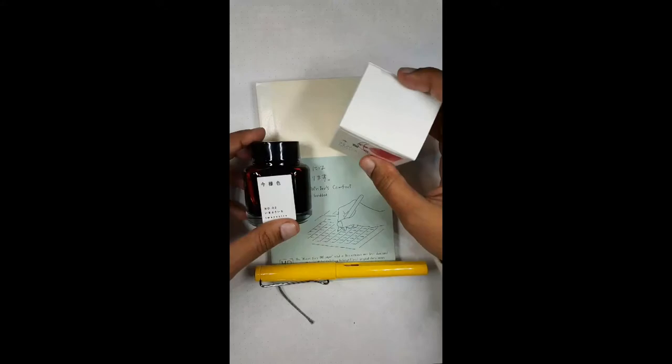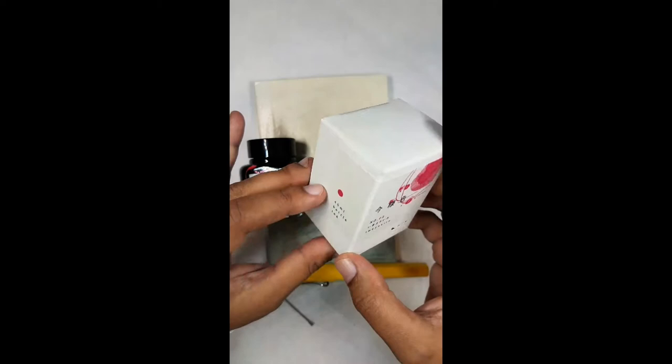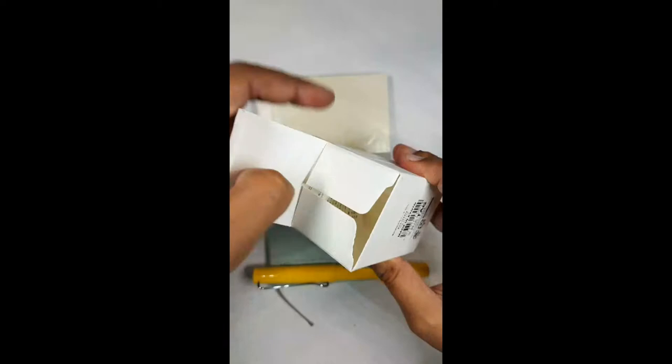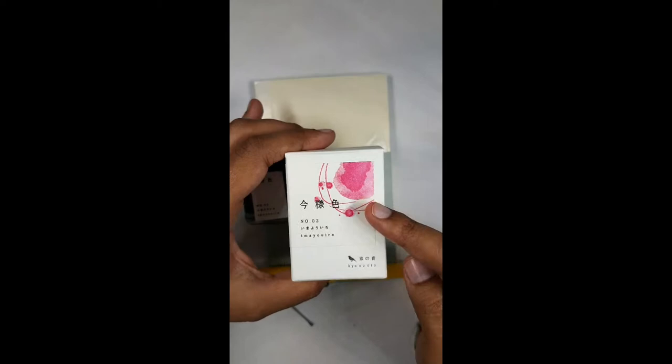Check out this gorgeous box it comes in. It's like this linen canvas type box, nice and firm, like a letter press. These are made in Kyoto. The box obviously isn't the highlight but it does show a nice depiction of the color of the ink.